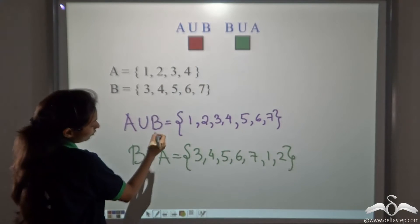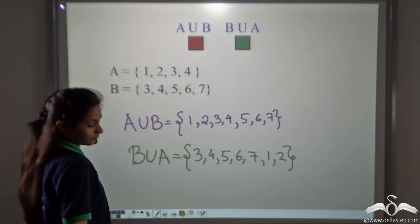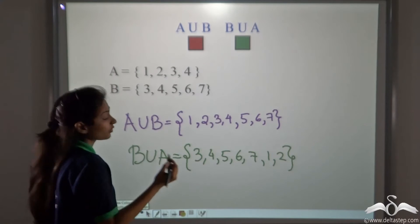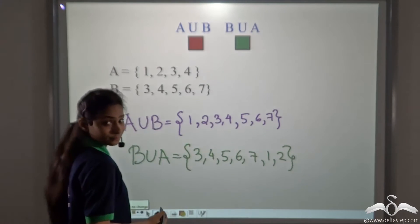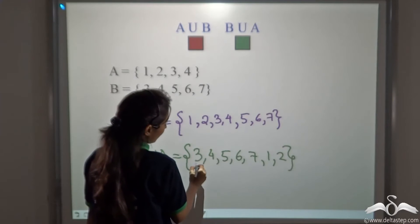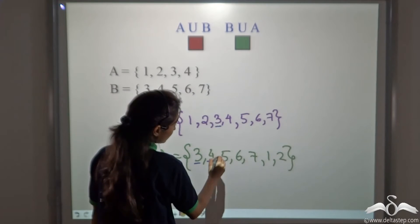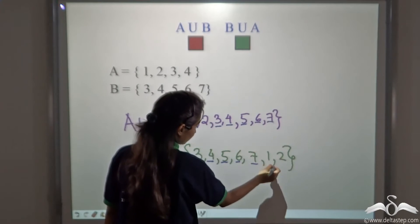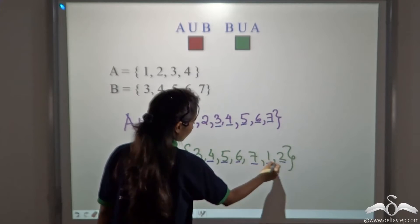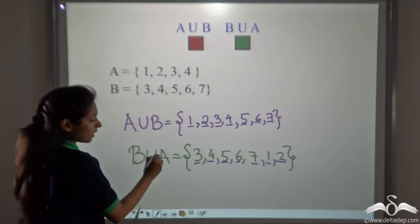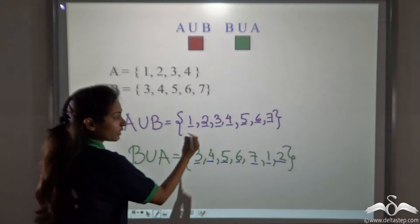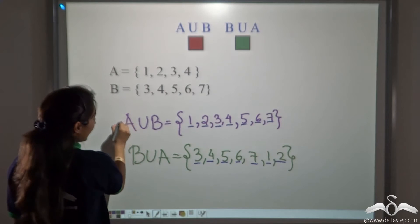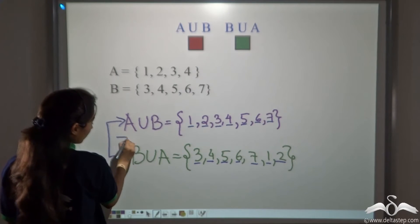Now is A union B equal to B union A? Well, we know that two sets are always equal even if their order is not the same. Here we can see that all the elements are present in both sets. So all the elements of A union B and B union A are the same — only their order is different. And in sets, order does not matter. So A union B is equal to B union A.